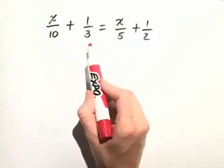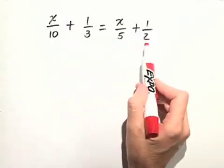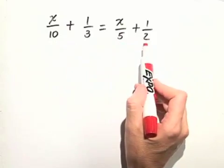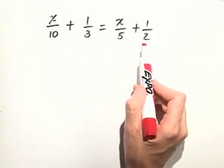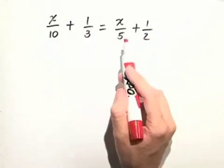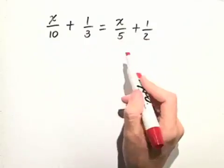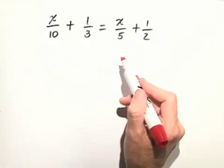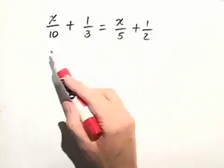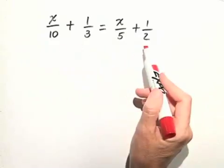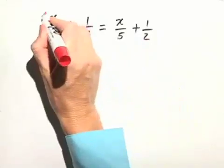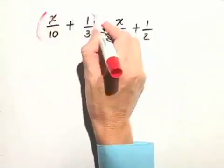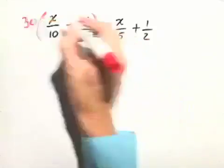So let's look at these numbers. We have 10, 3, 5, and 2. All of those numbers go into 30 evenly. So let's take both sides of this equation and multiply it through by 30. Another way you could figure out what you should multiply the equations through by is to ask yourself what would be the least common denominator if you were going to add all these numbers. So let's choose to multiply both sides of this equation through by 30.